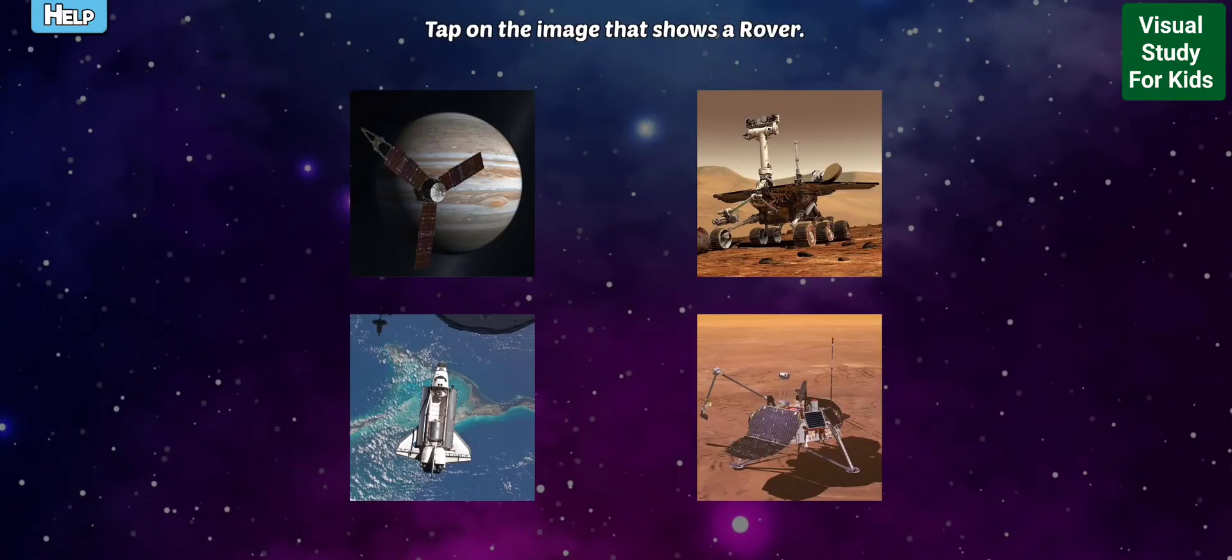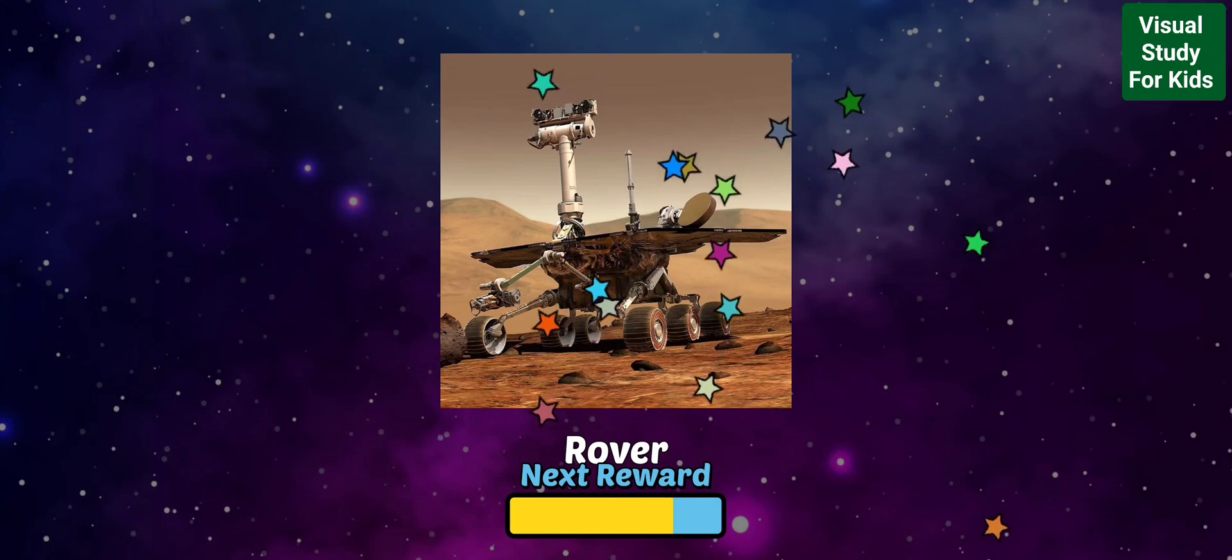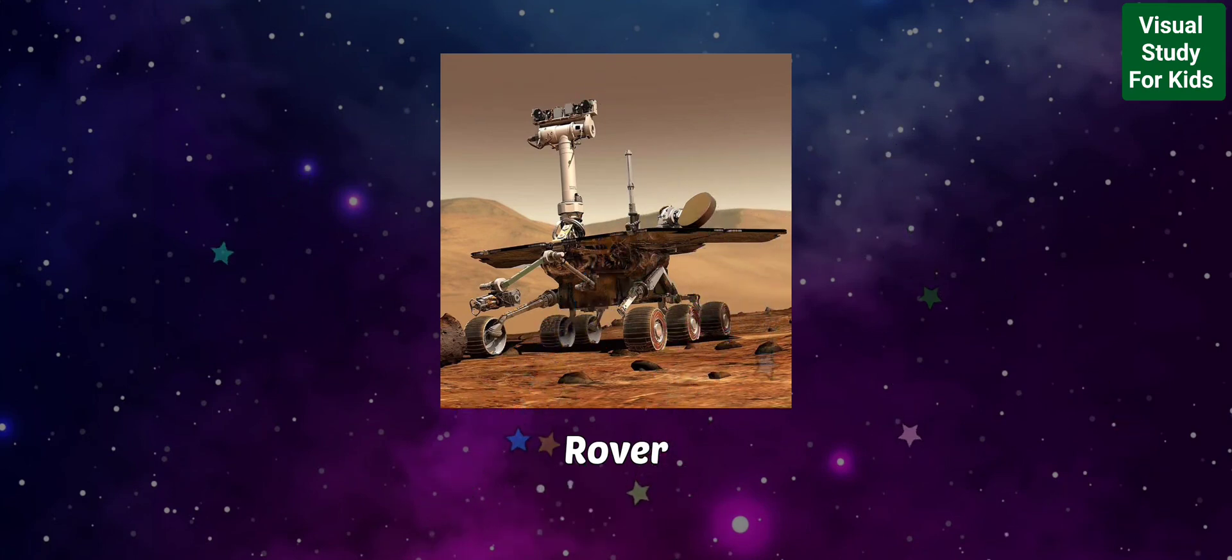Tap on the image that shows a rover. Rovers are a type of lander that can move around on wheels once it's touched down on a distant planet. This allows the rover to study multiple parts of a planet. Mars has had four different rovers land on it, and there are more on the way soon.